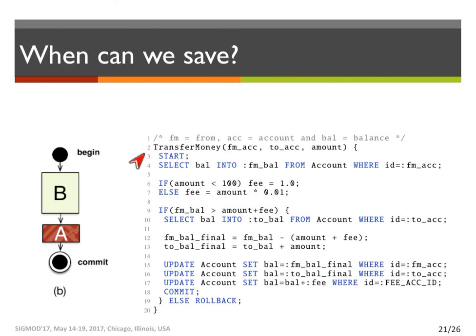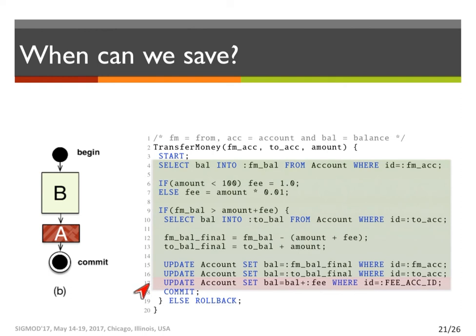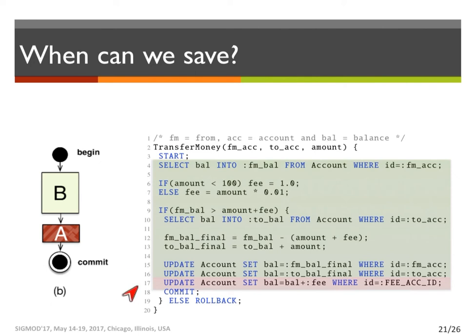For example, here is the transfer money program which we saw earlier. This example represents the second case, where the operations in the green section of the program will rarely have a conflict — what are the odds of having multiple operations done on the same account at the same time? But the operation in the red section will always lead to a conflict because all transfer money transactions will alter this fee account.